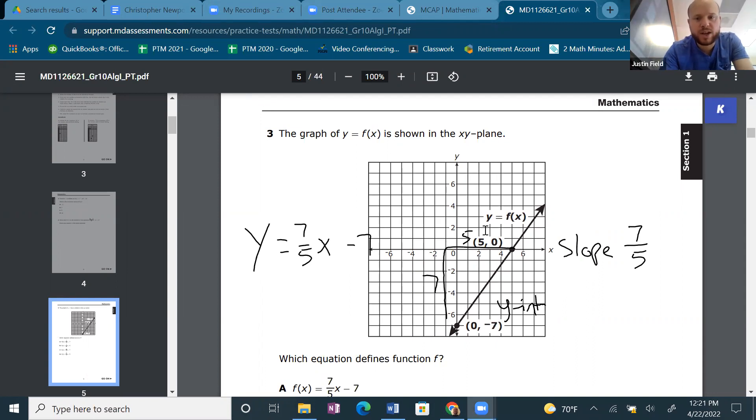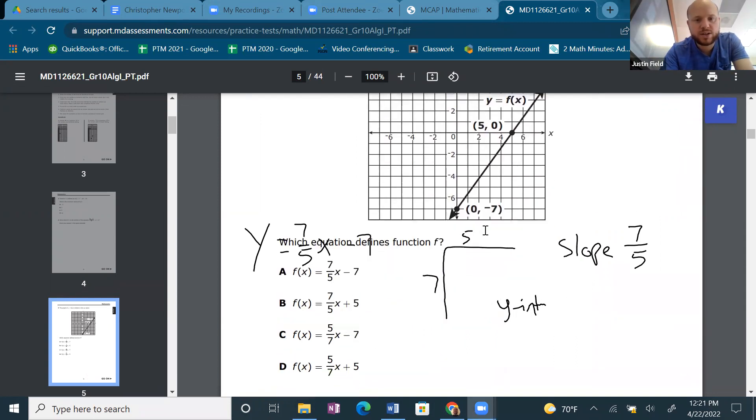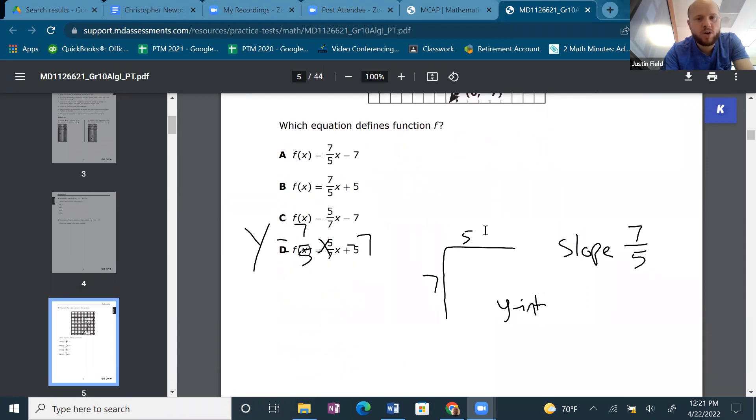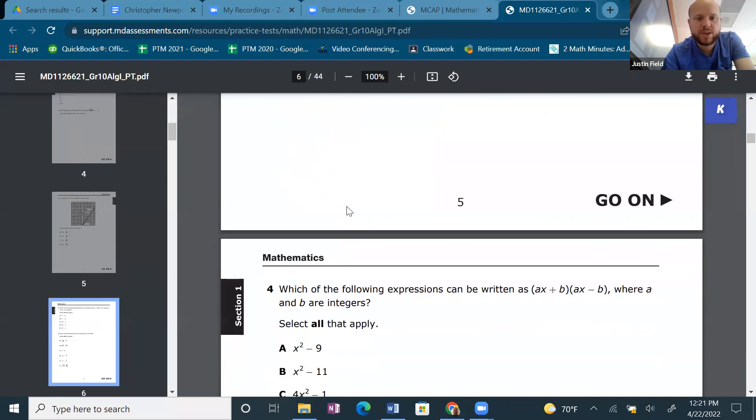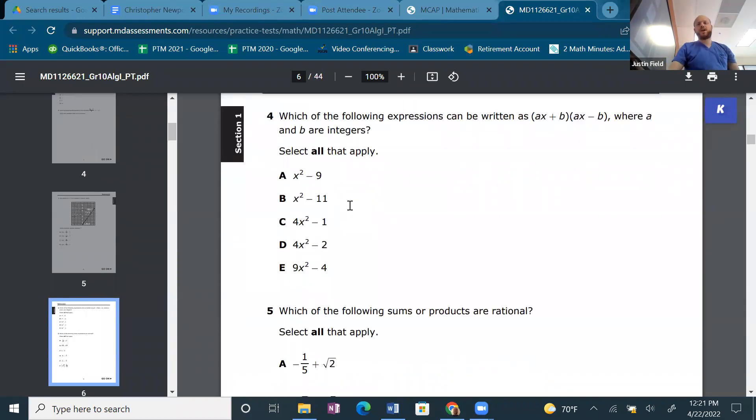But, hey, I wonder if they are trying to trick us. Nope, they're not trying to trick us. 7/5x - 7. It's A. Okay. Come on, Algebra 1 MCAP. Where's the hard ones?